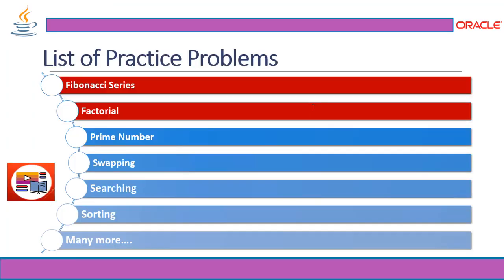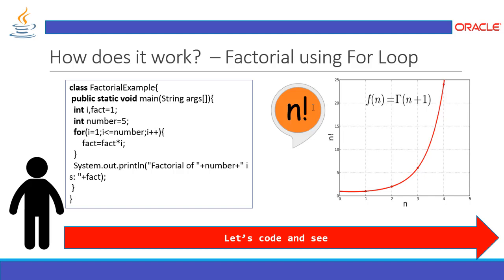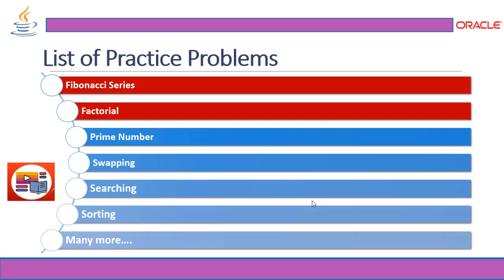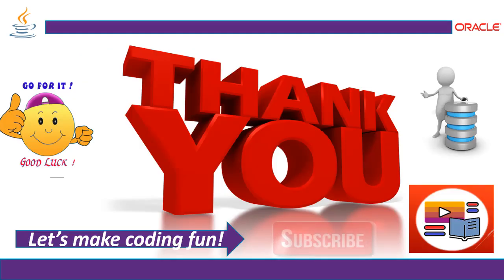You can also implement factorial using a do-while loop, while loop, for-each loop, and many other control statements. To analyze the behavior, execute it with different values, plot them on a graph, and observe the results. This is all about factorial implementation and demonstration. In the next session, we'll cover prime numbers. Thank you for watching — please subscribe and press the bell icon for notifications. Let's make coding fun!